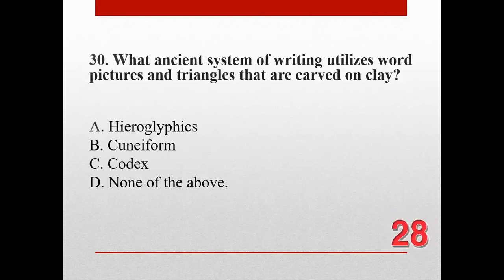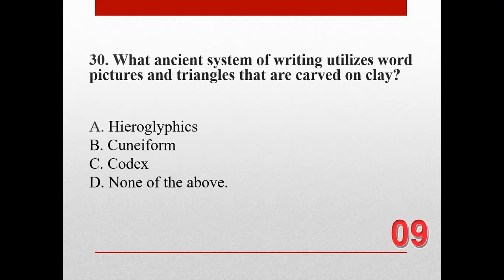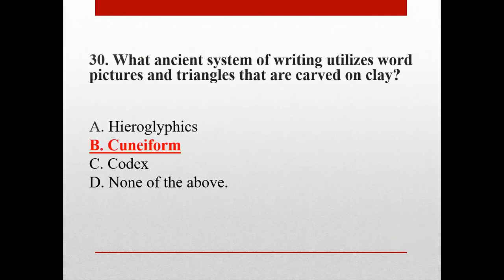Number thirty. What ancient system of writing utilizes words, pictures, and triangles that are carved on clay? A. Hieroglyphics, B. Cuneiform, C. Codex, and D. None of the above. The correct answer is B. Cuneiform.